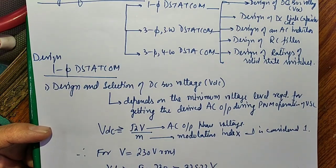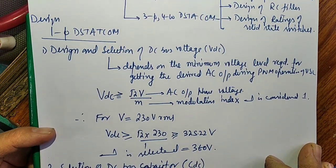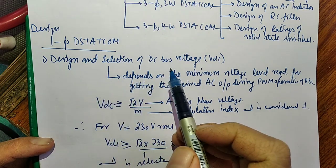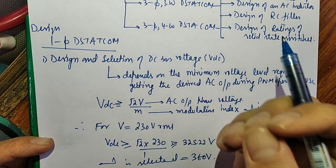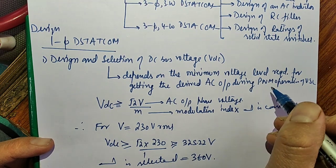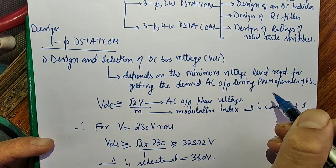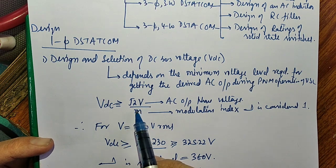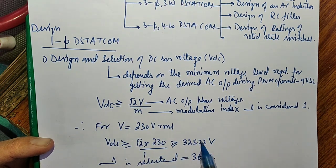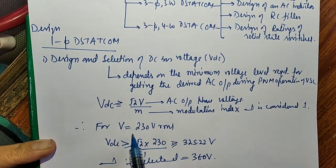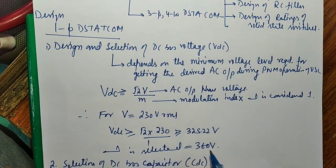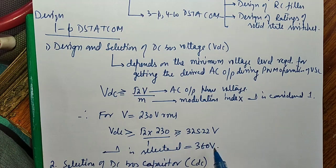We will start with the design of single-phase DSTATCOM. First, the design of the DC link bus: the selection depends upon the minimum voltage level required for getting the desired AC output voltage. VDC should be greater than the peak value of the AC phase voltage, that is V_phase multiplied by root 2. Taking modulation index M equal to 1, for V equal to 220 V, we get 325.22 V, and we set a higher margin of 360 V so that we can control it better.